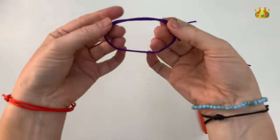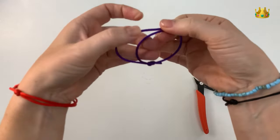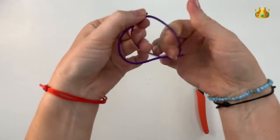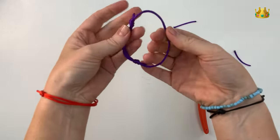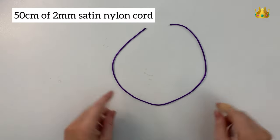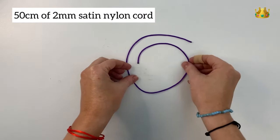In this video we're making a simple adjustable friendship bracelet. This design has two sliding knots that slide along to adjust our bracelet bigger or smaller. For this design we're using 50cm of 2mm satin nylon cord.